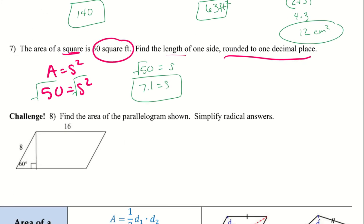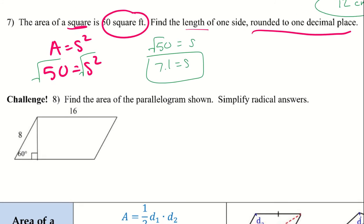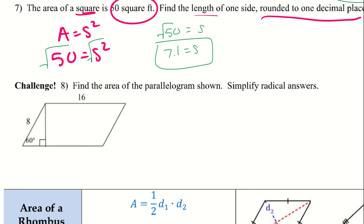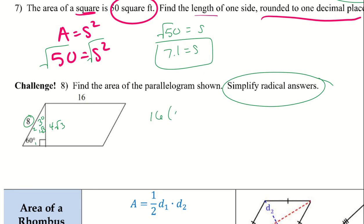Here's the challenge for the parallelogram — try number 8, then we'll discuss it. This parallelogram involves a 30-60-90 triangle with sides in the ratio 1 : √3 : 2. Multiplying by 4, the height is 4√3. The area is 16 times 4√3 = 64√3 square units, kept in simplified radical form.